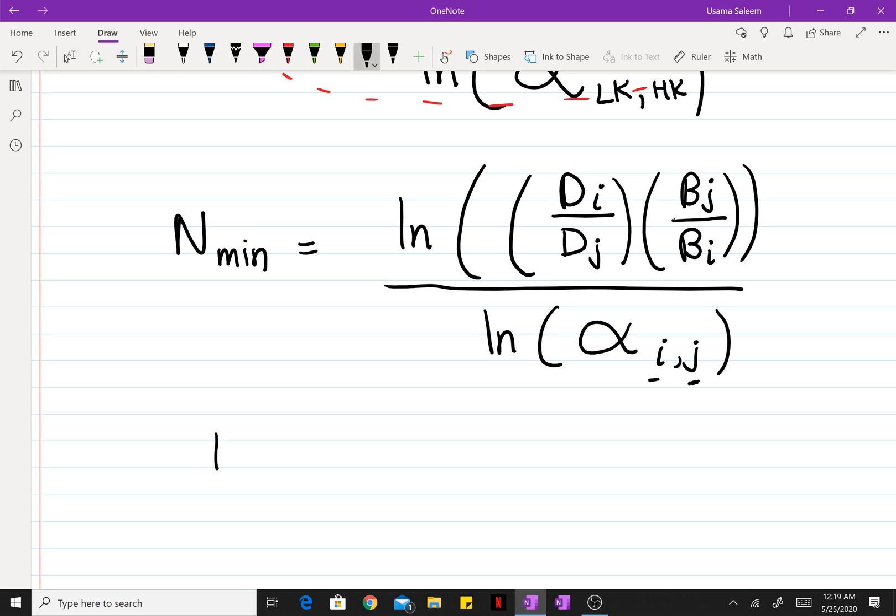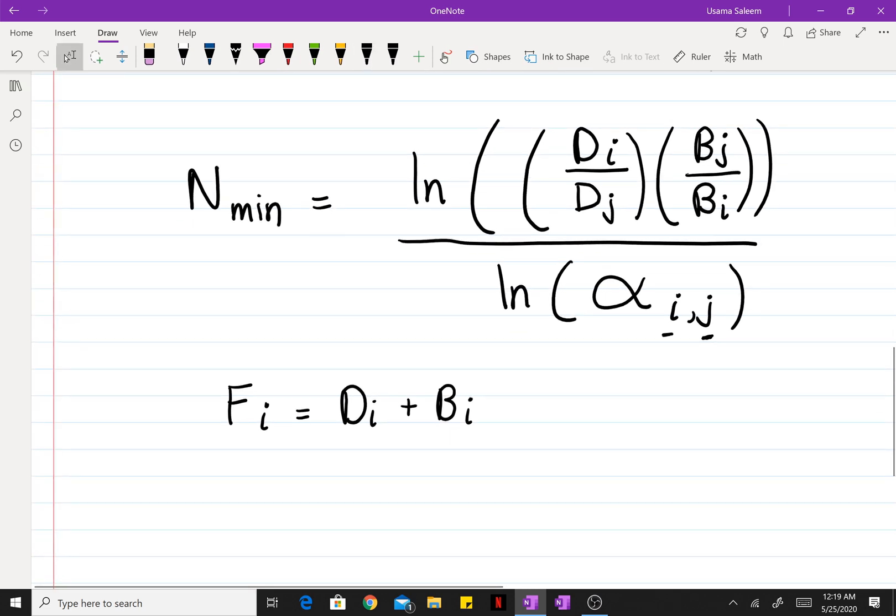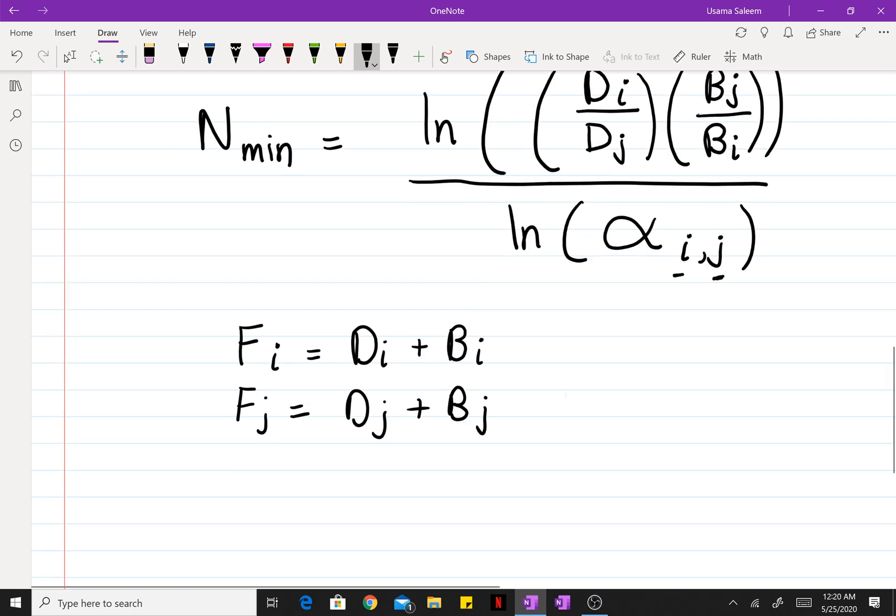And furthermore, we know that I coming into the feed must equal I leaving in the distillate and I leaving in the bottoms, from a simple steady state mass balance. Same goes for J.